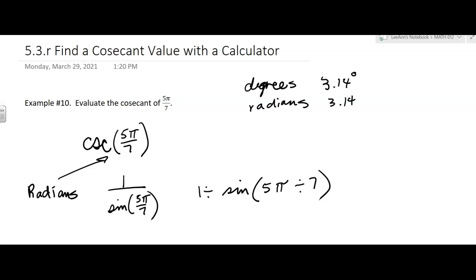So 1.2... I'm going to go 279. I'll go three decimal places, so 1.279. That would be then the cosecant of 5π/7.